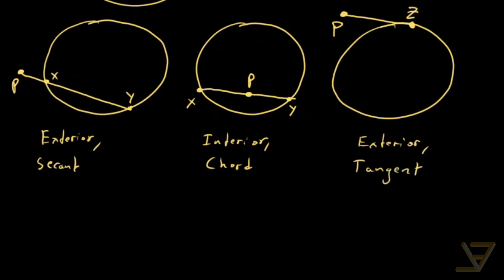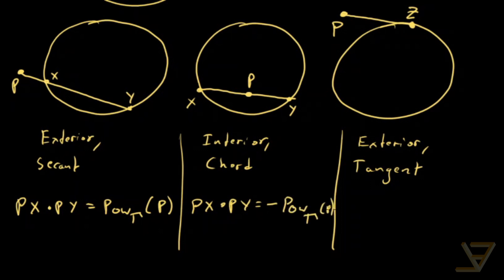And what we have here is that PX times PY is equal to the power with respect to gamma of P. And in the second case we have PX times PY is equal to the negative of the power with respect to gamma of P. And in the final case we have PZ squared. So it's sort of like a limiting case of the first one. PZ times PZ is equal to the power with respect to gamma of P. So that's what the power of a point theorem says.